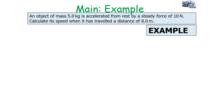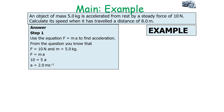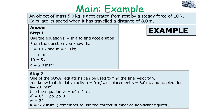An object of mass 5.0 kilograms is accelerated from rest by a steady force of 10 newtons. Calculate the speed when it has travelled a distance of 8 metres. First, use F equals ma to find the acceleration: F is 10 and m is 5, so a equals 10 over 5, giving 2 metres per second squared. Then use the SUVAT equation v² equals u² plus 2as, where u equals 0 and s equals 8 metres. So v² equals 0 plus 2 times 2 times 8, giving v² equals 32, therefore v equals 5.7 metres per second.